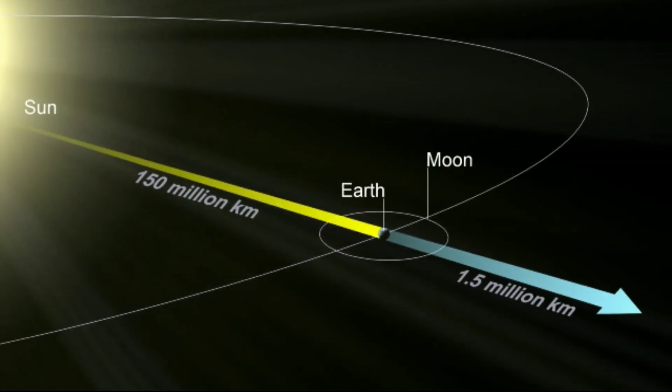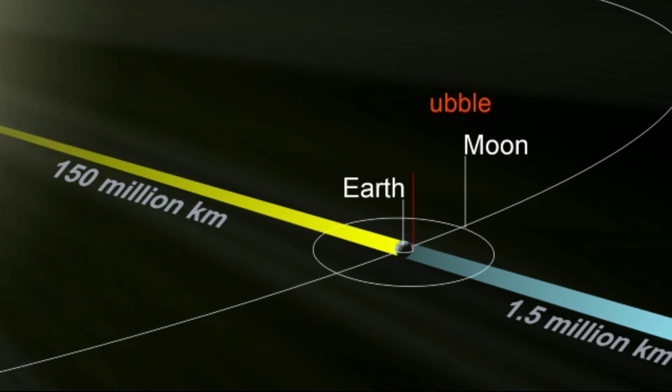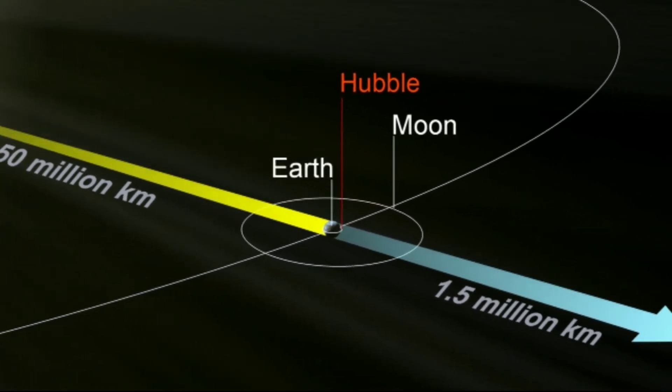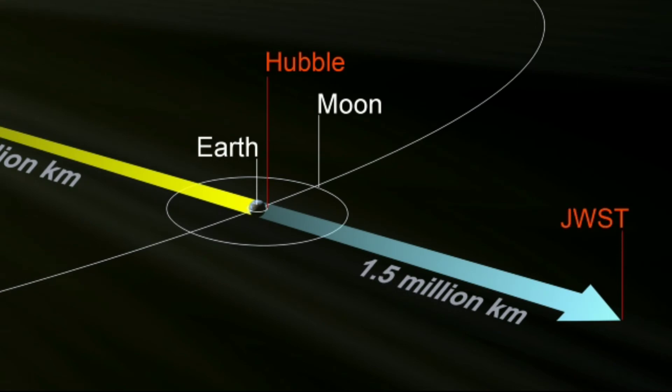A spatial point in space 1.5 million kilometers from Earth is particularly stable and favorable for a spacecraft. It is called L2 or the Second Earth Sun Lagrange point, and this is where the James Webb Space Telescope will be parked.